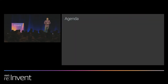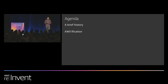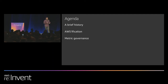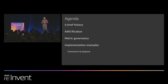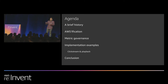Before we get into the agenda, can I get a quick show of hands — how many of you have heard of AWS? In today's agenda, we're going to talk about a brief history about the Prime Video team that built this platform, the AWSification part of their architecture, and how AWS helped them evolve their platform. Then we'll dive deep into metric governance — which metrics are important, how we decide false positives. We'll also cover implementation examples: clickstream versus playback data, live versus VOD, and finally some conclusions and takeaways.